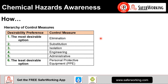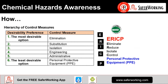In terms of how, we need to look at the hierarchy of control measures — how do we actually control exposure to chemical hazards? Elimination is the most desirable option, and we go down the range to the least desirable option, which is PPE. I've covered this in a previous video with a worked example. The acronym is ERICP: Eliminate, Reduce, Isolate, Control, and PPE.